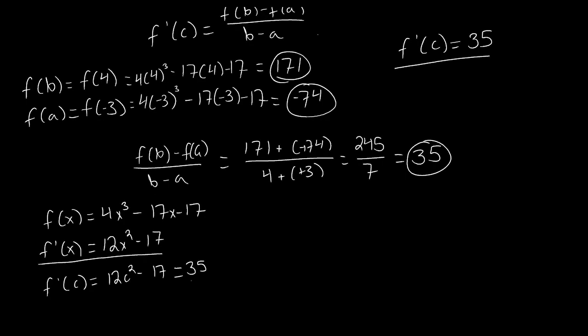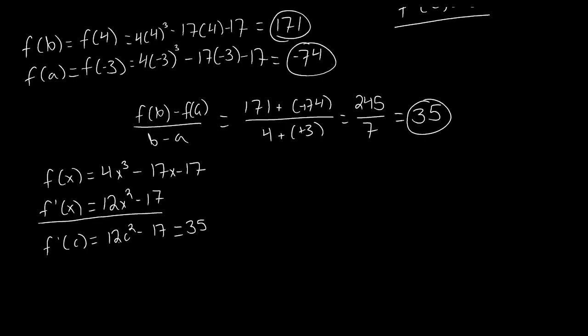So now what we're going to look for is the c value that gives us 12 times that c value squared minus 17 to evaluate to 35. Let's solve for c. If we add 17 to both sides, we get 12c² = 52. If we divide both sides by 12, we get c² = 13/3. And then taking the square root of both sides, we get that c is either plus or minus the square root of 13 over 3.